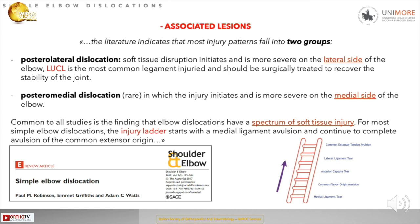Associated lesions indicate that most injury patterns fall into two groups. In posterolateral dislocation, soft tissue disruption initiates and is more severe on the lateral side of the elbow — the LUCL is the most commonly injured ligament and should be surgically treated to restore joint stability. On the other hand, in posteromedial dislocation, which is rare, the injury initiates and is more severe on the medial side.